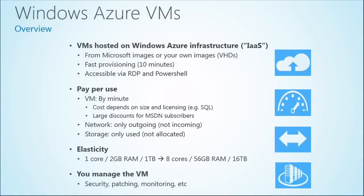It's very easy to change the size of your virtual machine through the portal — it takes a couple of minutes. You can go from a very small virtual machine to a very large one, from one core and two gigabytes of RAM to eight cores and 56 gigabytes of RAM. We're always introducing new sizes, so as time progresses you'll see more RAM and more cores.